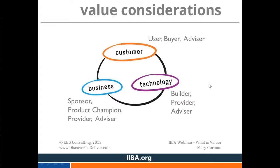A value consideration is a variable used to assess one product option versus another. Value considerations are not features. For example, a customer may value convenience — that's a value. A feature would be: they want to search for a product by location, or order online, or have 24-hour support. Those are features we can build. But how we rate or prioritize one feature against another would be based on that value of convenience. A couple years ago I attended Agile Games in Boston, and a group of us created a game called 'The Backlog is in the Eye of the Beholder.' The key learning is that people get a deeper understanding of value considerations by exploring different perspectives.